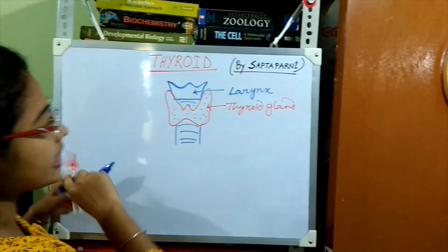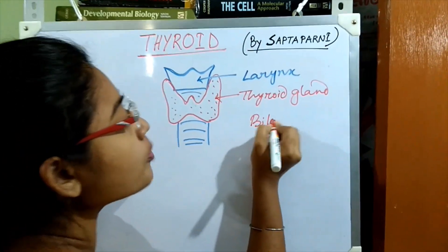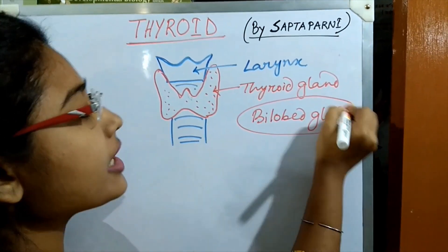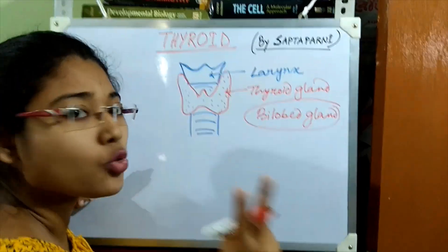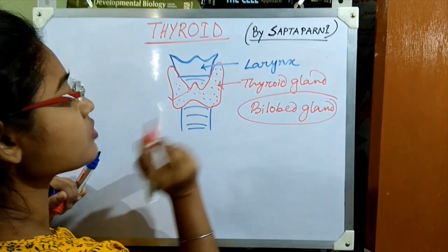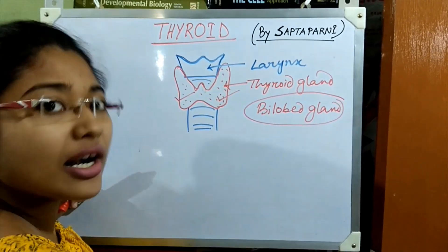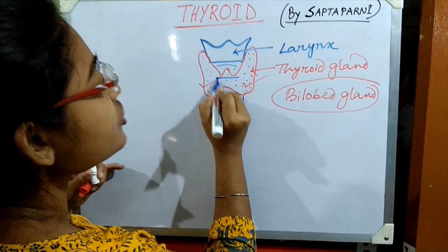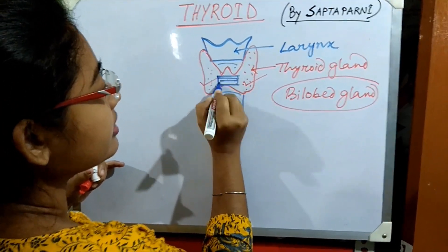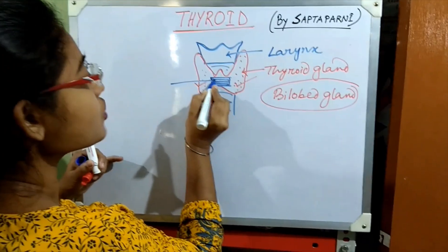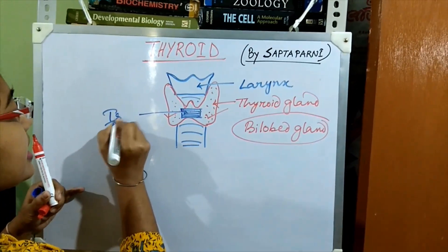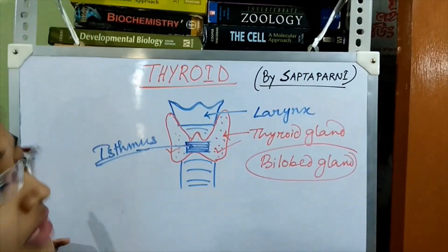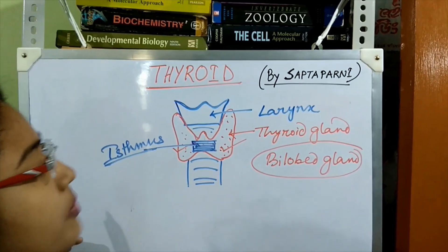The thyroid gland is known as a bi-lobed gland — it has two lobes. One lobe on each side, and these two lobes are joined by a bridge-like structure known as the Isthmus.